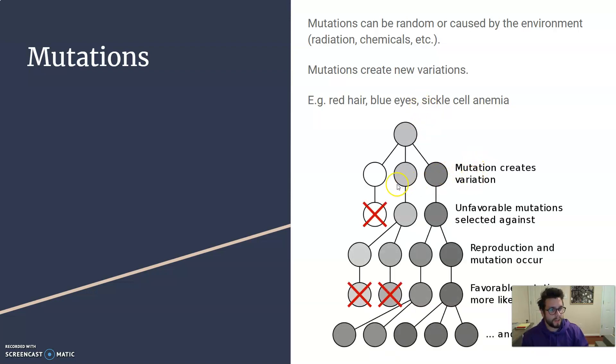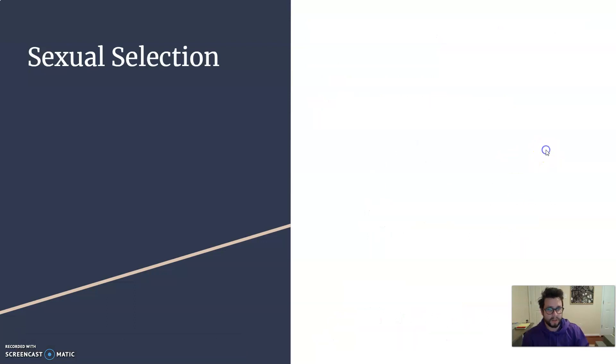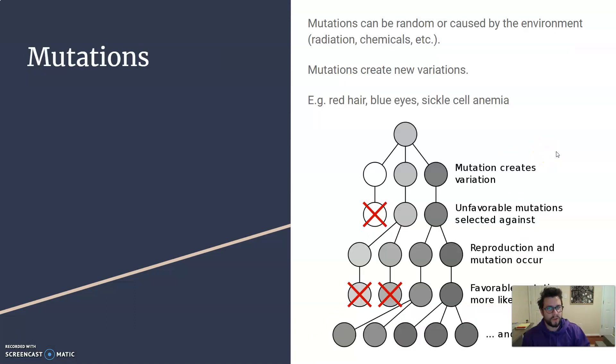So if a mutation creates a variation, the unfavorable mutations won't be as likely to survive in the next generations. These mutations will continue to be passed down as things reproduce. The favorable mutations are more likely to survive and keep passing them down. So you'll change the population over time as these mutations arise. It's worth noting that not all mutations are good. Most of them are actually bad or they don't do anything. A few of them do help though in the right circumstances.